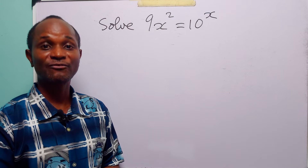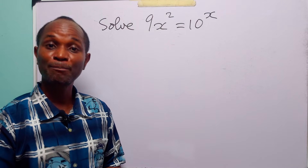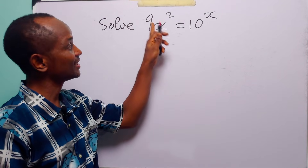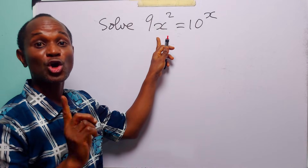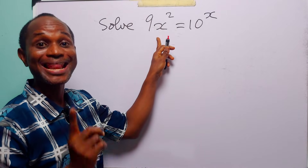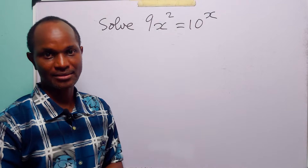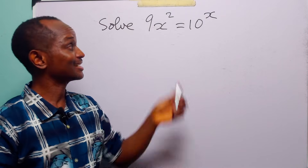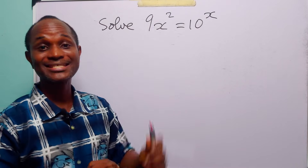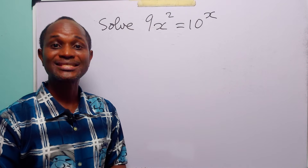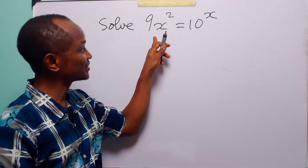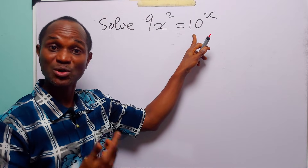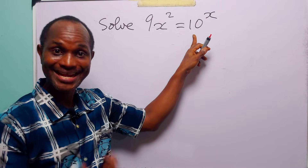Now, before we begin, notice that for all positive real values of x, this left-hand side must always be less than this right-hand side. So that means that the value of x that satisfies this exponential equation — that is, the value of x for which the left-hand side is going to be equal to the right-hand side — must be negative.